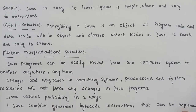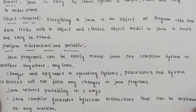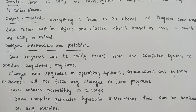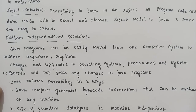Next: platform-independent and portable. Java programs can easily move from one computer to another computer anywhere. This Java program can be easy to execute. Changes and upgrades in one operating system, processors, and system resources will not force any changes in the Java program. The system can update the Java programs. Java ensures portability in two ways.